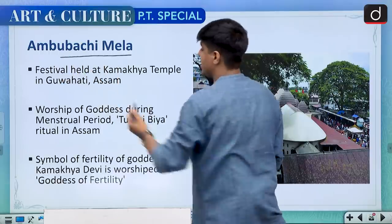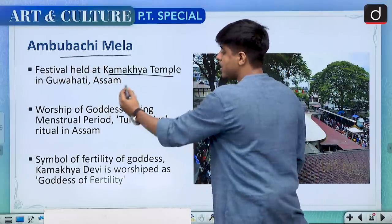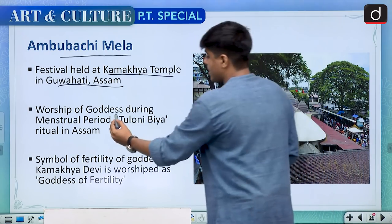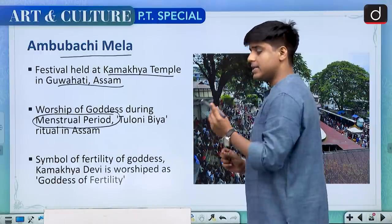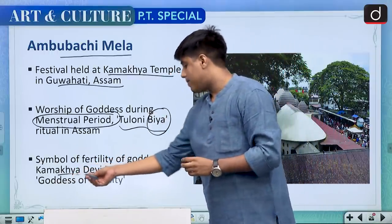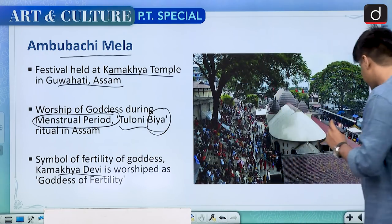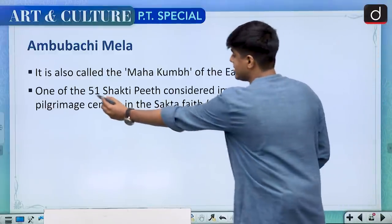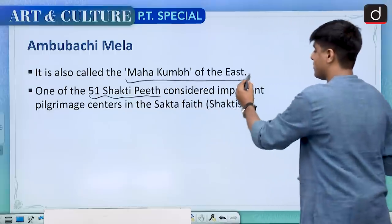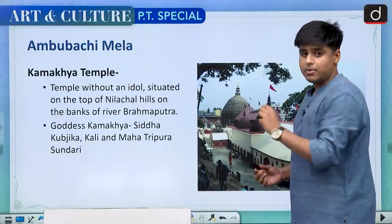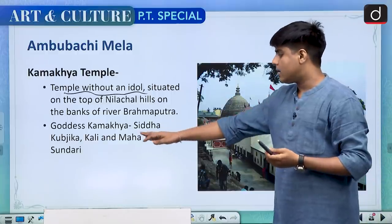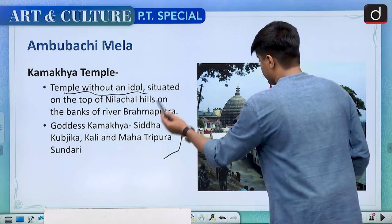Ambubachi Mela is celebrated at Kamakhya temple in Guwahati, Assam. Very interestingly, the onset of the menstrual period is celebrated in this ritual called Toloni Bia — Bia meaning marriage — and the symbol of fertility, Kamakhya Devi, is worshipped during this festival. Kamakhya Devi is one of the important Shakti Peeth out of 51 Shakti Peeths spread across the country, and the festival is also called Mahakumbh of the East. Kamakhya temple is considered a temple without an idol, and goddesses Kamakhya, Siddha Kubjika Kali and Mahantripura Sindhuri are worshipped here.